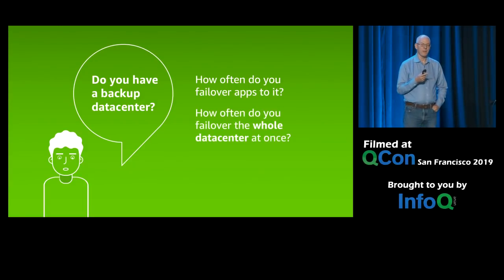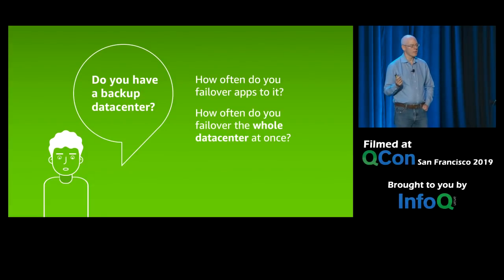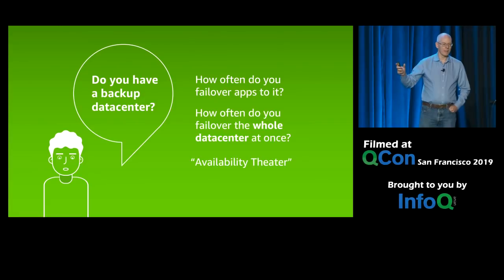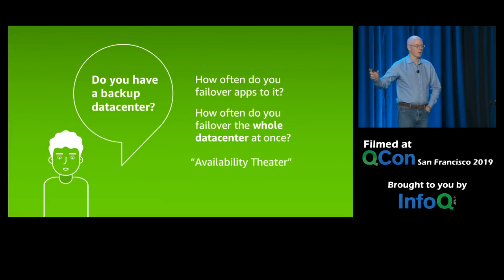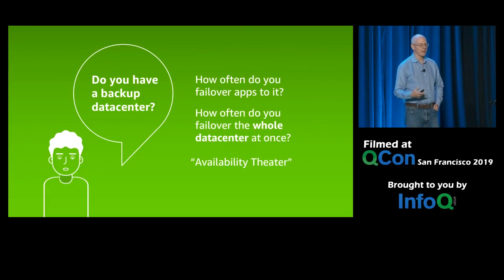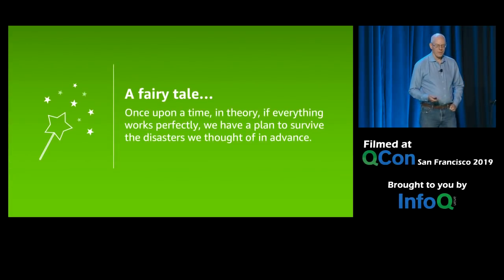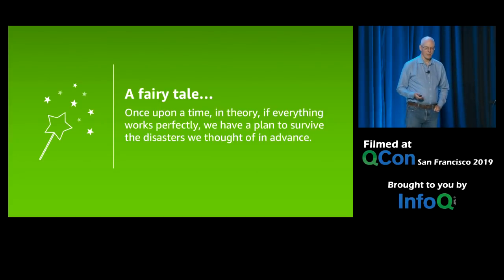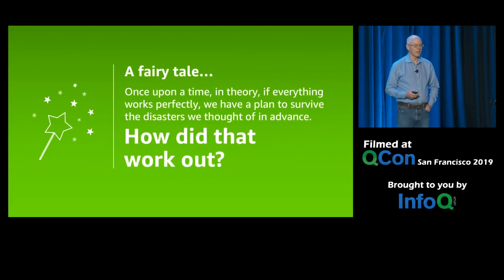And then the whole data center at once — does that ever happen? Typically the auditors make you test your critical apps; they don't pull the plug on the data center. I call this availability theater. You've spent a lot of money building a big data center, and if you ever had to use it, you know you'd be in terrible shape. The only time you actually test data center failure is when it actually fails — and that's when you discover how little of it actually works. So we have this fairytale: once upon a time in theory, if everything works perfectly, we've got a plan to survive some of the disasters we thought of in advance.